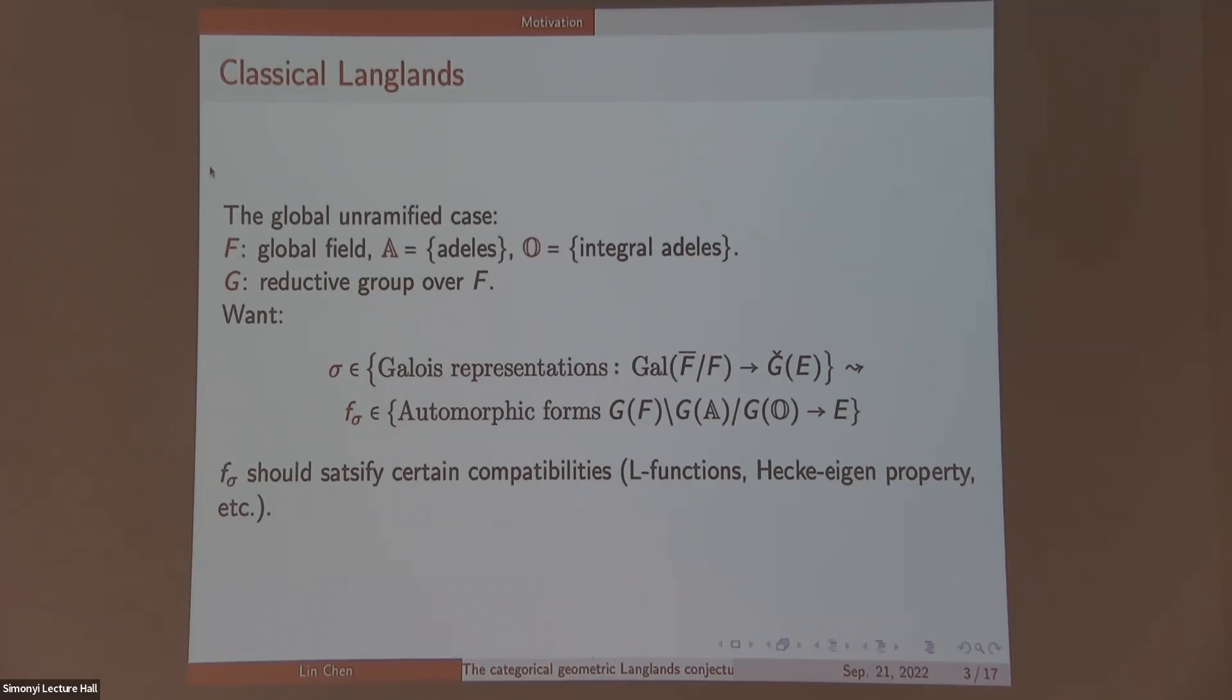Instead, I want to talk about the geometric picture of this correspondence. By geometric picture, I mean more or less things appear here have geometric incarnations and we can try to translate this correspondence into a conjecture about these geometric incarnations.